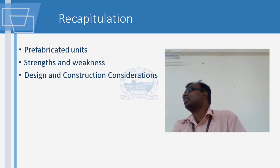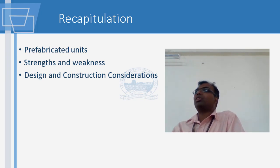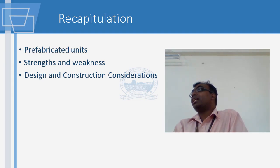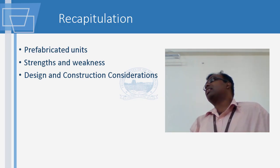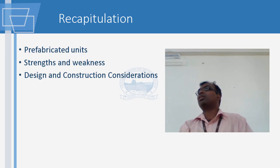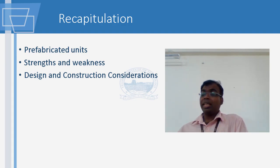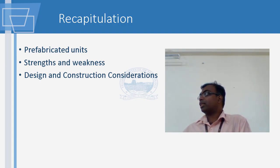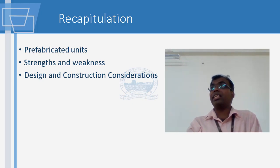In the last four classes, we were looking at what prefabrication was - the merits, demerits, what are the considerations that you take into account when you are going to do a design. And also, most importantly, we find that there is a relative shortcoming in terms of cost and the ability to transport elements.